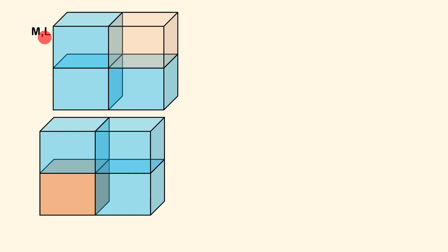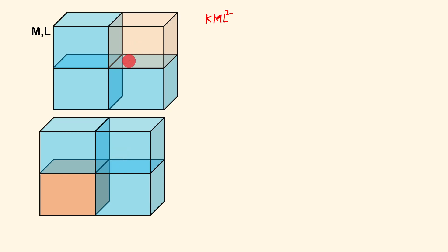We have a cube of mass M and length L, and about the body diagonal its moment of inertia is assumed to be KML². We take four such cubes and make a layer, then make another layer of four such cubes. When we slide one layer over another, they form a bigger cube of mass 8M — because there are eight smaller cubes — and length 2L.